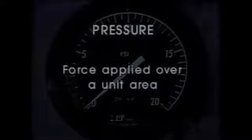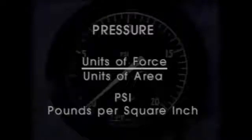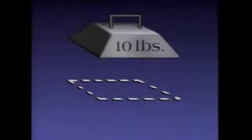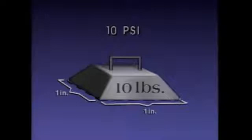On earth, an object that has one pound of mass weighs one pound. As you may know, most of the measurements taken in a plant are related to process variables. The most common process variables measured are pressure, temperature, flow, and level. Let's discuss the units related to measuring process variables, beginning with pressure. Pressure is defined as force applied over a unit area. It's measured in units of force divided by units of area — pressure is usually measured in PSI, pounds per square inch. To illustrate this, let's say we have ten pounds of pressure applied over a one square inch area — we have ten pounds per square inch.